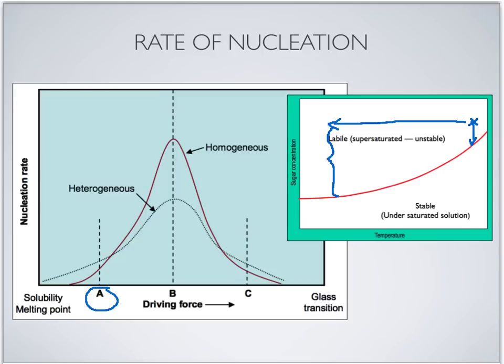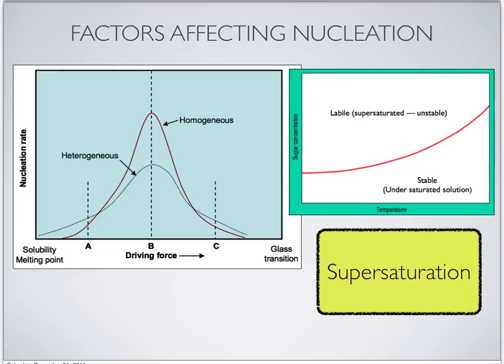This diagram also shows a comparison of the relative rates of nucleation for homogeneous versus heterogeneous nucleation. Homogeneous nucleation does not begin until a reasonably high driving force — a critical supersaturation — is attained; beyond this point the nucleation rate increases dramatically with small increases in driving force. On the other hand, heterogeneous nucleation occurs initially at a lower supersaturation driving force and increases rather slowly compared to homogeneous nucleation.